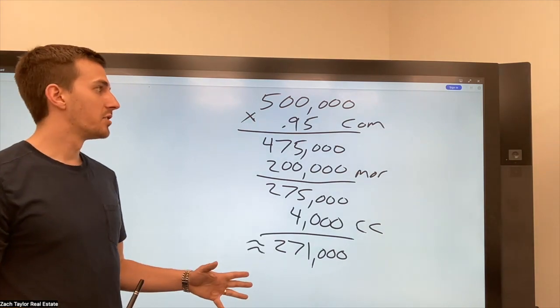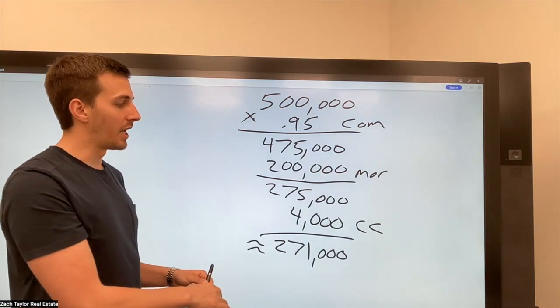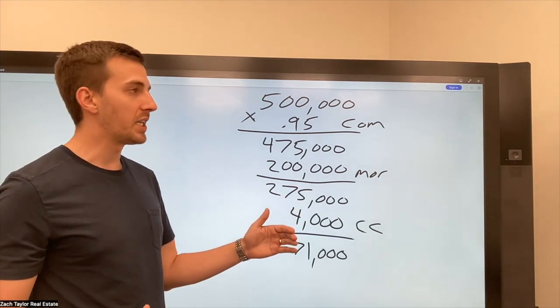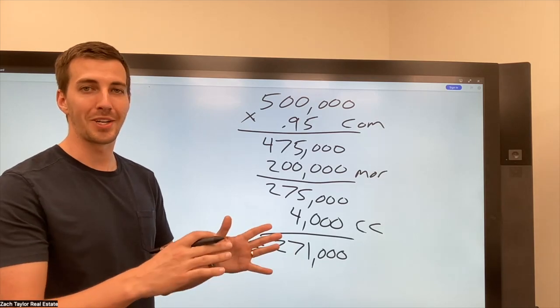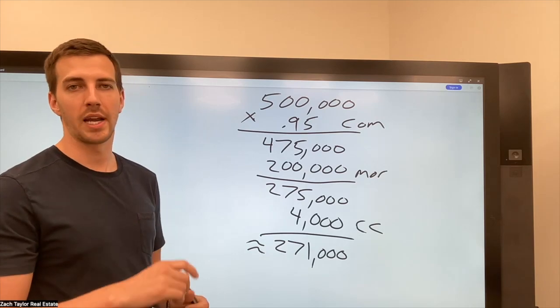Again, this is not an exact. So we want to reiterate that with our seller. This is just an estimate. A lot of times title companies, they're able to write up an official PDF document. It's called a seller net sheet and they can break down and give them an estimate and it'll have a disclaimer on there.